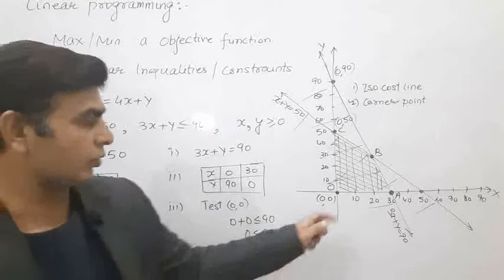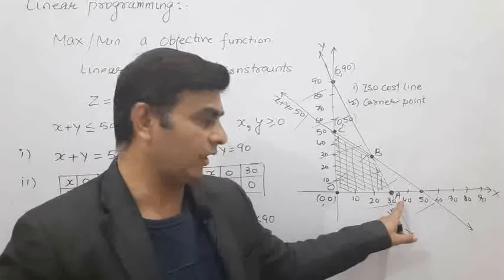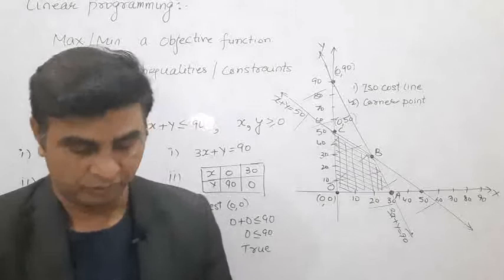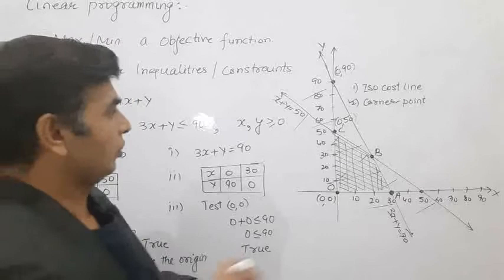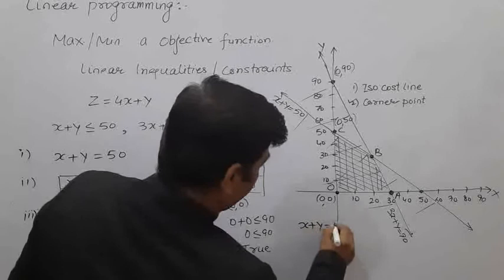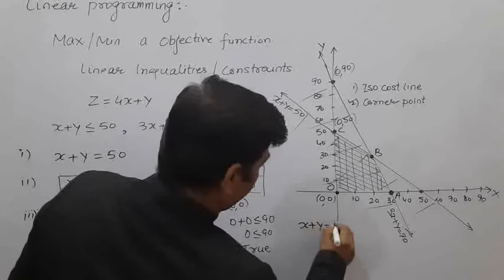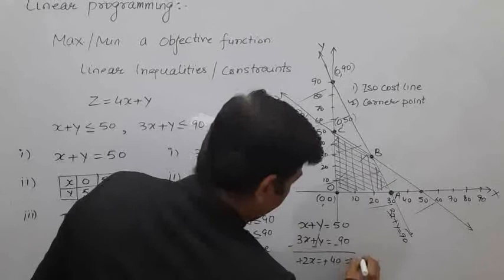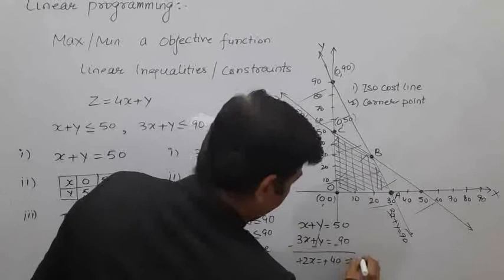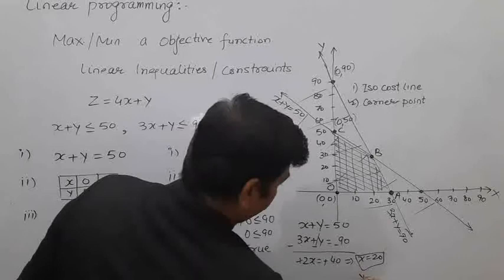We know the corner points O(0,0), A(30,0), and C(0,50), but we need to find point B — the intersection of x + y = 50 and 3x + y = 90. Using the elimination method: subtracting gives −2x = −40, so x = 20. Substituting back, y = 30. Therefore point B is (20, 30).